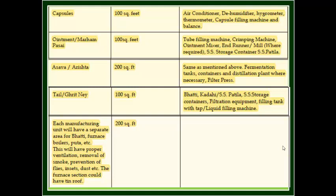Five: Asawa and Arishta. Space required: 200 square meters. Recommended equipment: same as mentioned above, apart from that fermentation tanks, containers, and distillation plant where necessary, filters and press are also required.